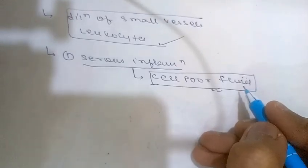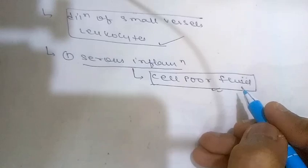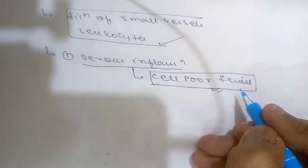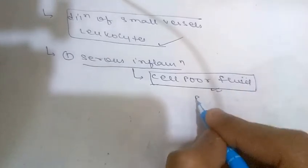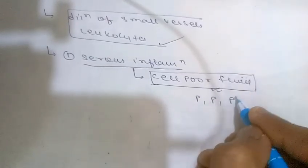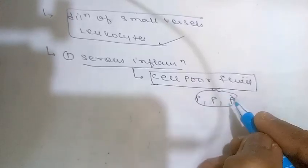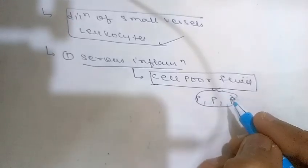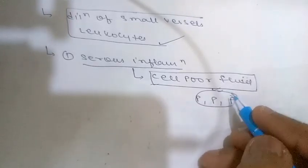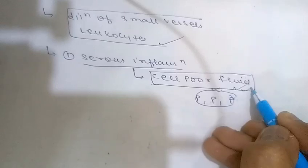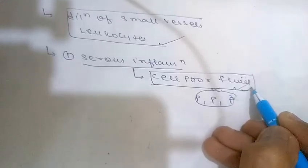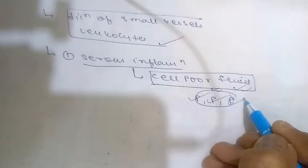Serous inflammation involves fluid accumulation in spaces created by cell injury, or into body cavities lined by peritoneum, pleura, or pericardium. The fluid in serous inflammation is cell-poor and accumulates in these specific anatomical spaces or body cavities.